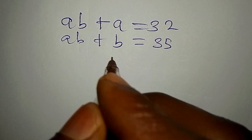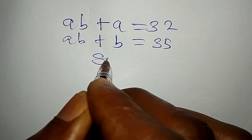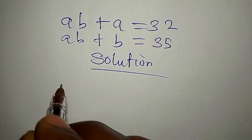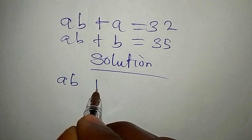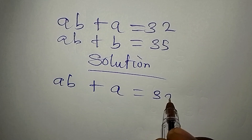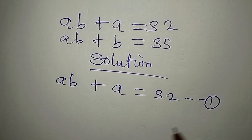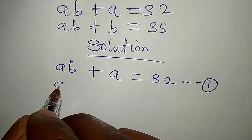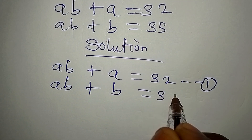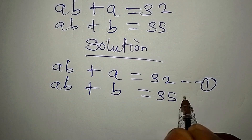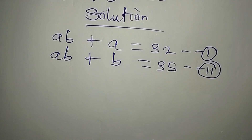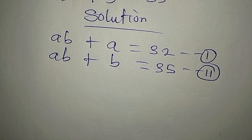Let's provide the solution to this. AB plus A equals 32 — this is our equation 1. AB plus B equals 35, and this becomes our equation 2.